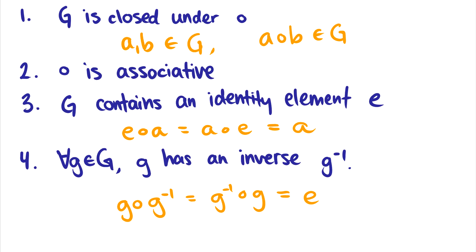So four axioms: closed, associative, identity, inverse. And we're going to check all of these when we do problems about figuring out whether things are groups or not.